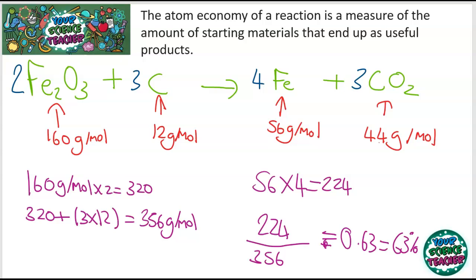If we looked at the other reaction of magnesium and oxygen making magnesium oxide, because all of the reaction is making useful products, this reaction has an atom economy of 100%. If you're going into industry, you obviously want the highest atom economy. This is a really good reaction for having such a high atom economy, while the one producing iron maybe is not such a good reaction.